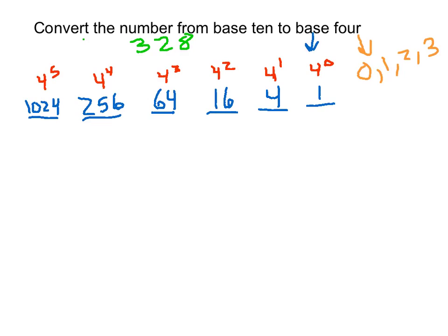If we were to put a 2 in the 1024 column, that represents 2 times 1,024 — much larger than 328. In fact, if we put any number other than 0 in that column, it's going to be larger than 328. So no digit is going to go into the 1,024 column.